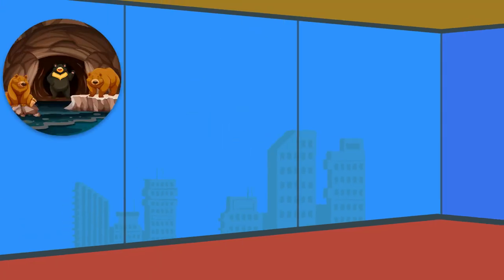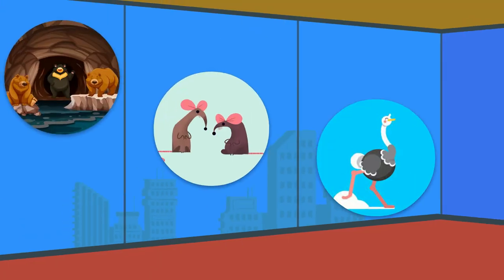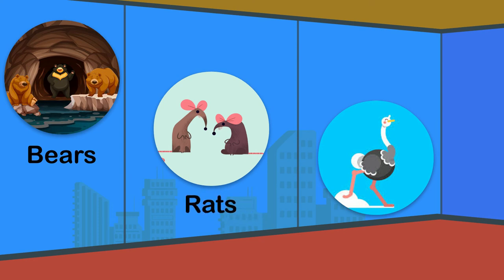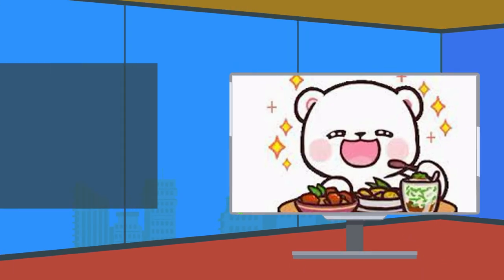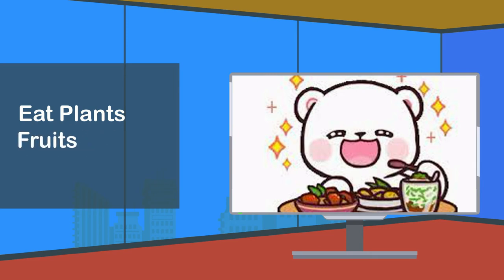Some animals eat both plants and meat, such as bears, rats, and ostriches. For example, bears eat plants, fruits, insects, and other small animals. Such animals who are both plant and meat eaters are known as omnivores.